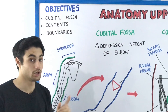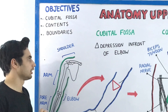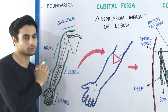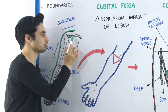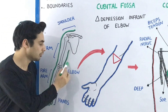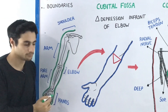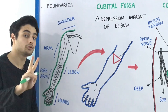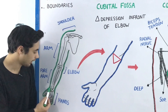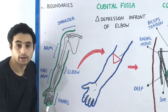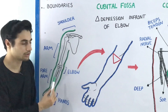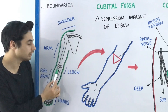We know that the upper limb is divided into seven main regions, starting with the shoulder, which consists of the clavicle bone and the scapula. Then in the arm region we have the humerus bone. The elbow connects your arm with the forearm. In the forearm we have two important bones: the radius bone and the ulna bone. In the hand and wrist we have the carpal bones and the metacarpal bones.